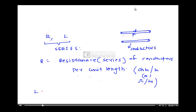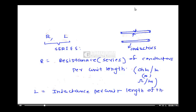Similarly, L is nothing but inductance — the inductance per unit length of the conductors. The unit for inductance is Henry, so the unit here is Henry per meter.